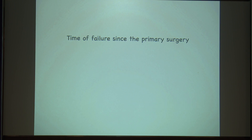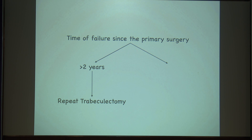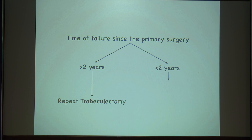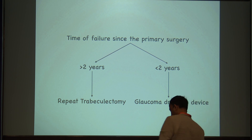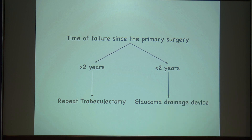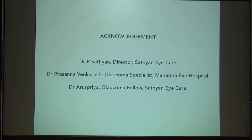How do you decide whether to go for a repeat trabeculectomy or a drainage device? See the time of failure since the primary surgery. If it is more than two years, you can try a repeat trabeculectomy; but if it has failed in less than two years, repeat trabeculectomy is not going to help and you will have to go with a glaucoma drainage device. I conclude here — it is a large topic and I have given just a brief idea.